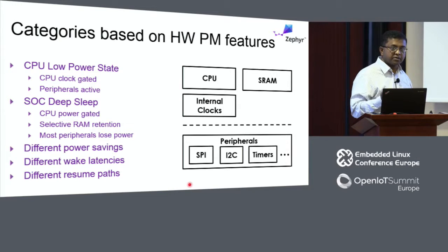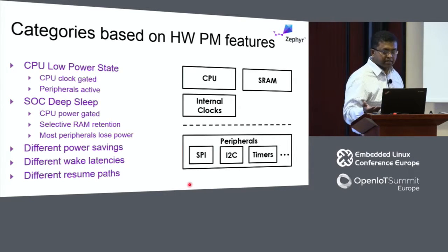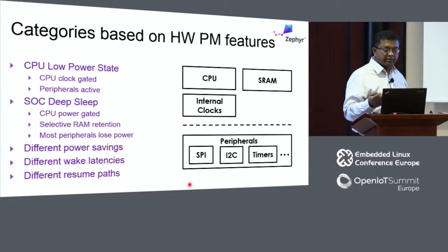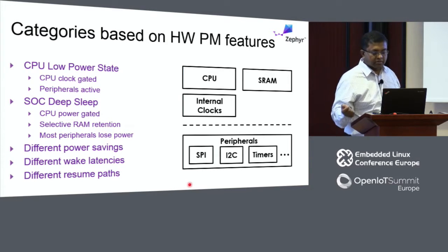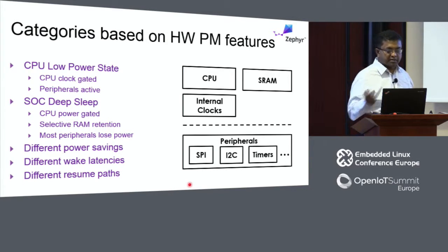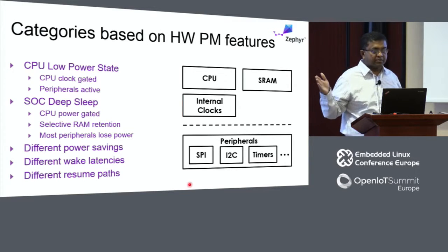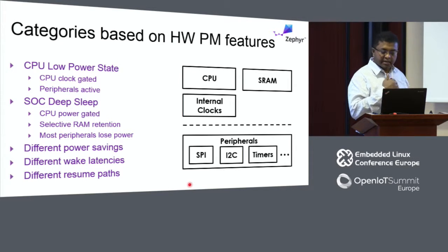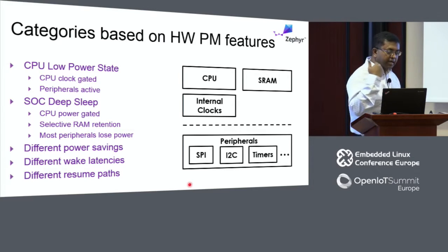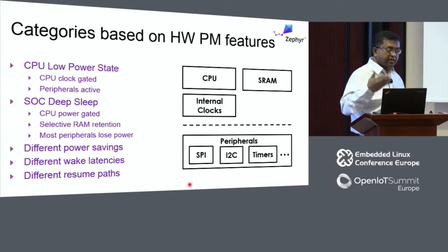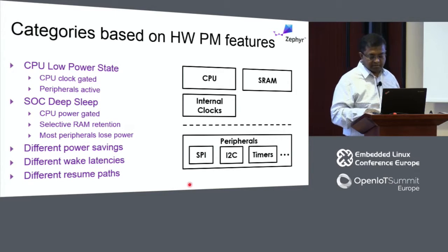CPU low power states usually have less power saving but are very quick in recovery. If you have a few microseconds to save power, you can use that. If you have a long time to sleep, you can use deep sleep and save considerable power. States like hibernate are expected to make batteries last more than 10 years.